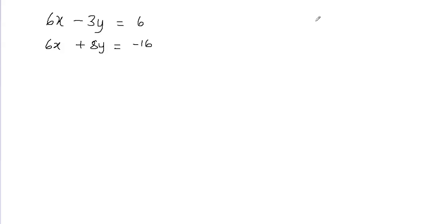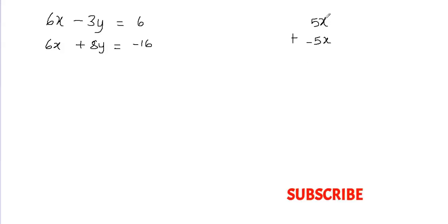For example, if you're looking at the x variable and the coefficient in one equation is 5, and in the other equation the coefficient is negative 5, you can add those two equations and eliminate x, because 5x plus negative 5x will add up to 0.